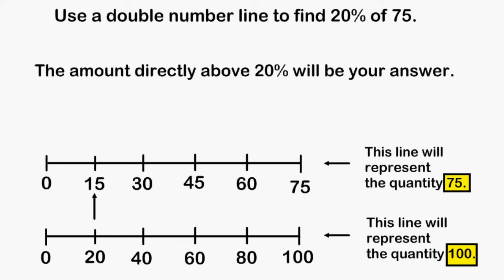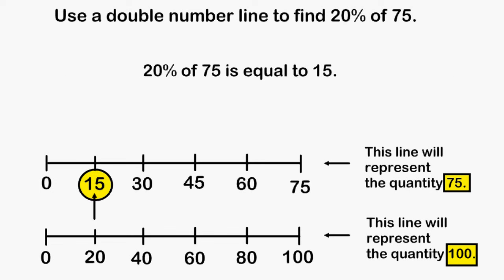Simply go to 20% on the bottom number line and look at the value directly above 20. It is that value that is 20% of 75. So we may say that 20% of 75 is equal to 15.